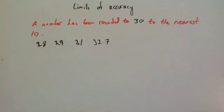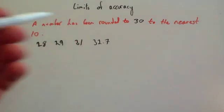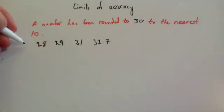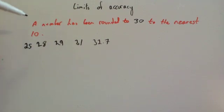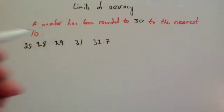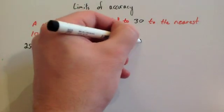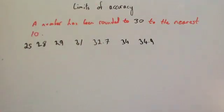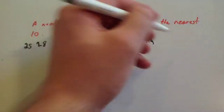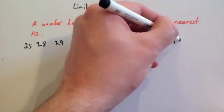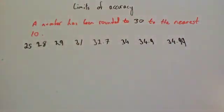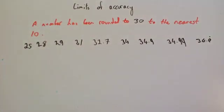Let's consider the highest possible and the lowest possible values it could be. The lowest possible value is quite simple — it's going to be 25. 25 would be the lowest value that would round up to 30 to the nearest 10. For the highest value: 34 would obviously round to 30, 34.9 would round to 30, 34.99 would round to 30, and even 34.9 recurring would round to 30 to the nearest 10.